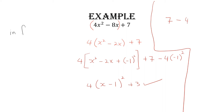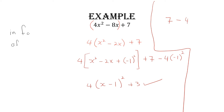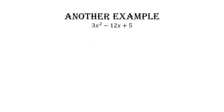This is now in the standard form: a times (x plus h) squared plus k. So our k is three, our h is negative one, and our a is four. For CXC they could ask you to find a, h, and k — and that's exactly what we found here by completing the square. Be mindful of the notation: they'll either say 'complete the square' or 'write in the form a(x+h)²+k.'